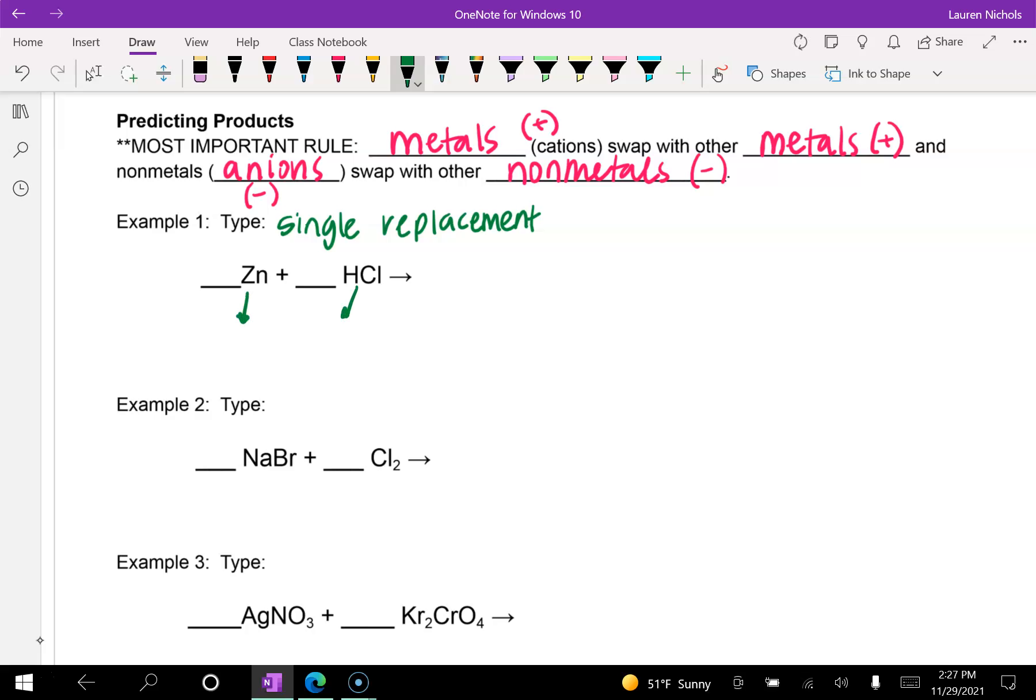And so what you do is you split it up into your charges. When you have a compound like this, HCl, you're always going to have something that's positive and something that's negative. Now, zinc is a transition metal. So normally you would need a Roman numeral or some other way to figure out what charge it is, but it's on the back of the periodic table. So zinc has a positive two charge. Now, HCl, hydrogen, positive one, because it's in column one. Chlorine, negative one.